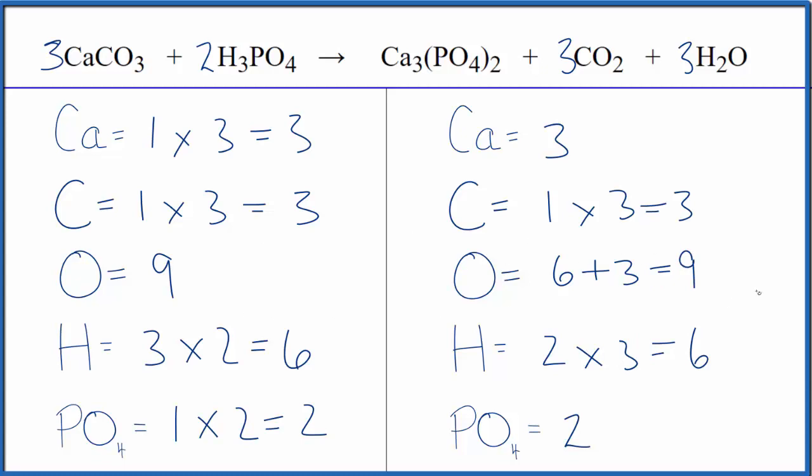The key really, leave the oxygens till last. And if you have a polyatomic ion like the phosphate ion on both sides, count that as one thing. That'll save you a lot of time and time matters on exams.